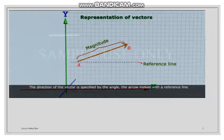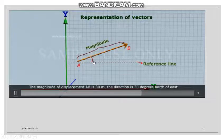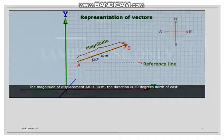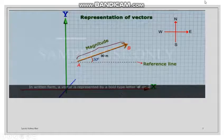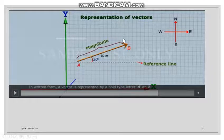To specify the direction of this vector, we draw a reference line along the axis. The angle between the vector and the reference line — for example 30 degrees — shows its direction. So 30 degrees towards the northeast side shows the direction, and the length shows the magnitude.